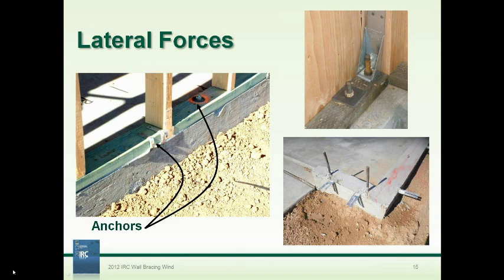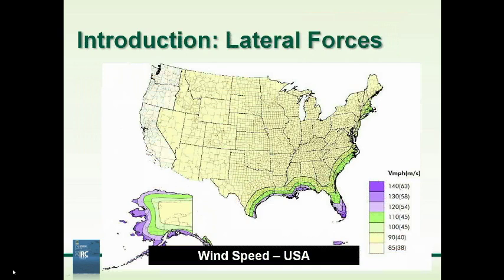The 16 different bracing methods in the prescriptive code will be covered at the next webinar — we'll want to remember the distinction between anchor bolts and hold down devices. Wind speeds come from the wind speed map. The vast majority of the country falls within the 90 mph wind speed area, with an 85 mph area across the west coast where we also see high seismic situations. Prescriptive bracing from the IRC can be used up to 110 mph — at 110 mph and greater, you fall outside prescriptive wall bracing limits and need a different method.